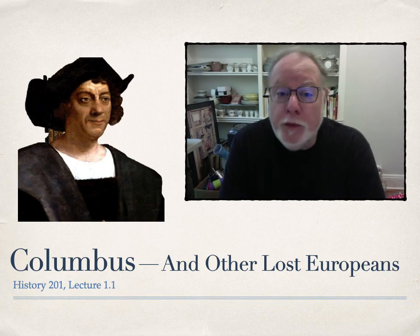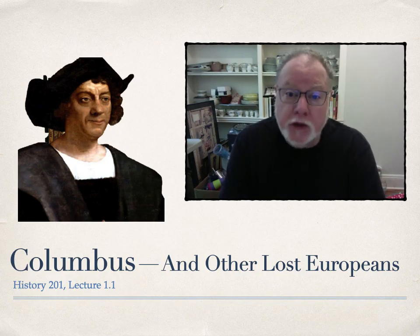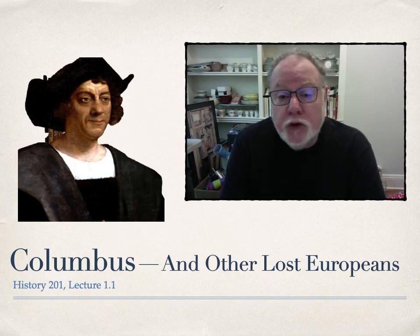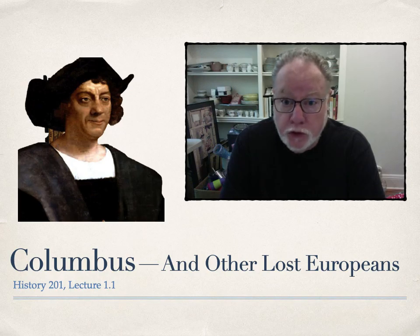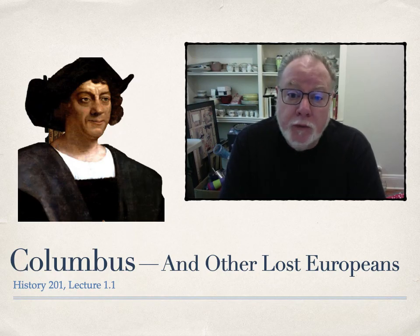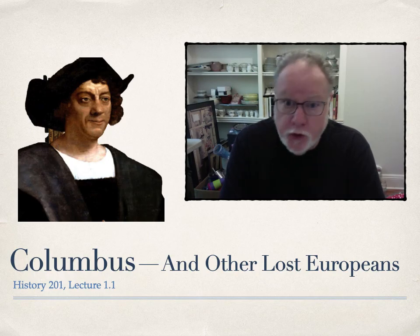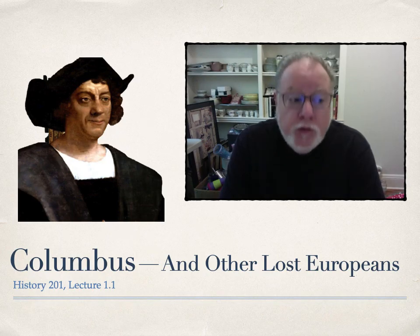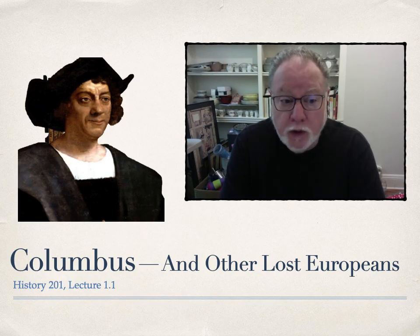The first lecture is called Columbus and Other Lost Europeans. It's a brief discussion of the aims and goals of the original explorers — the original Europeans who came to try to find Asia — and ran into a huge and inconvenient chunk of real estate called the Western Hemisphere, the Americas. On September 25th, 1492, absolutely nothing of any consequence happened.